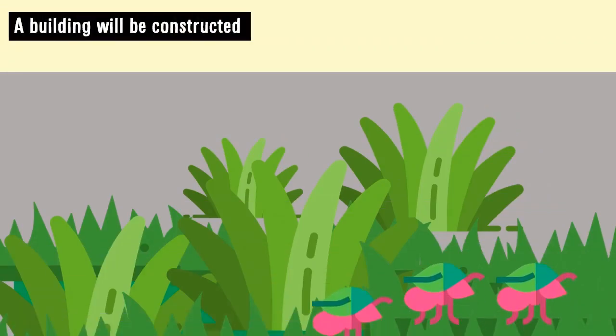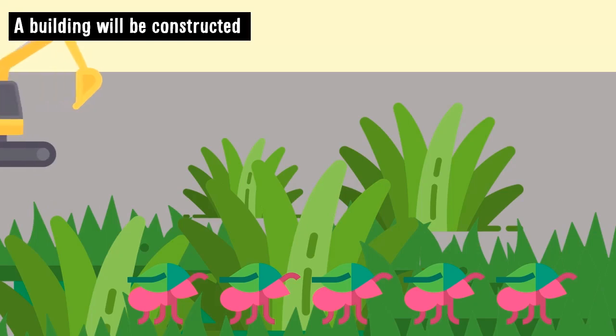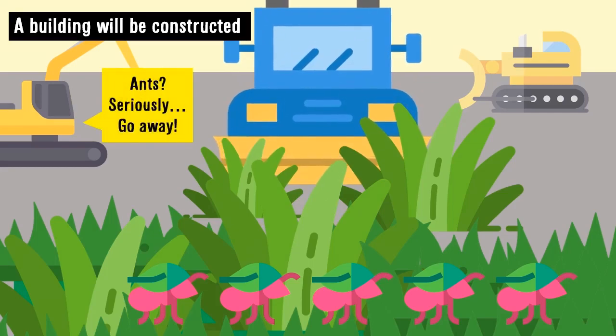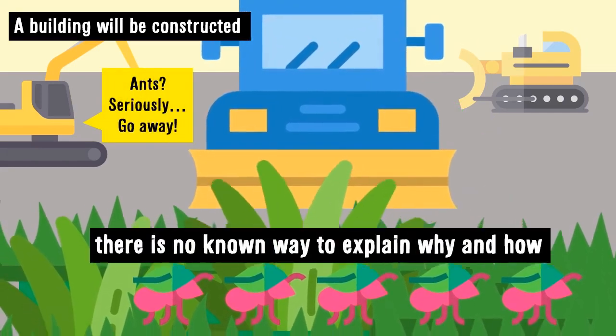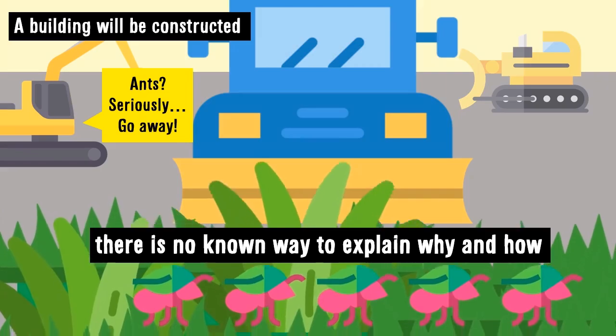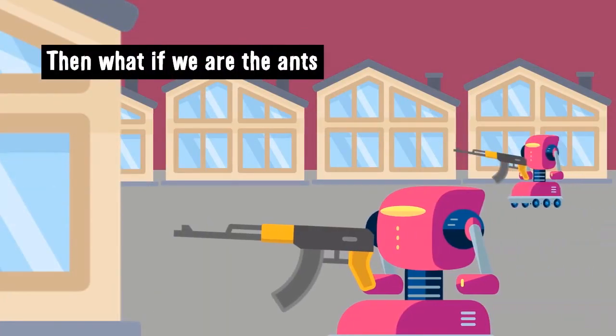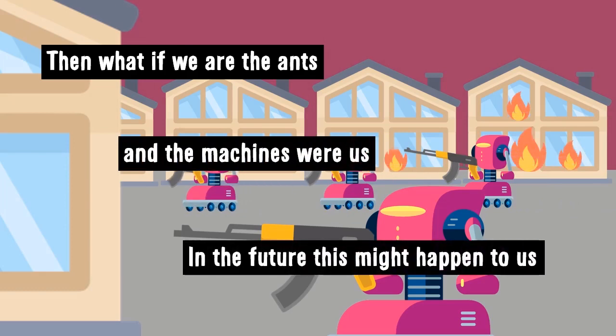If there is a colony of ants in an area where a building will be constructed, then we would just start the construction without thinking of those ants. And even if we care about these ants, there is no known way to explain why and how we have to build the building. Then what if we are the ants and the machines were in our position? In the future this might just happen. When machines decide to do something we don't understand and requires us to be gone, then they will with no doubt remove us.